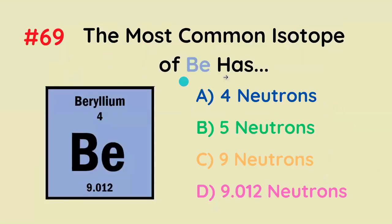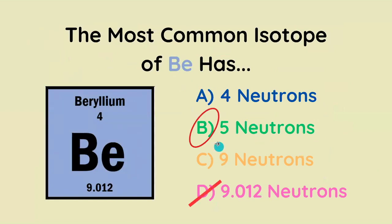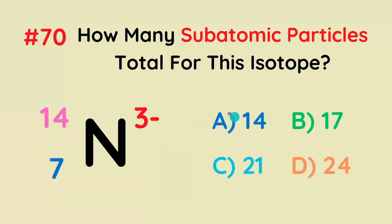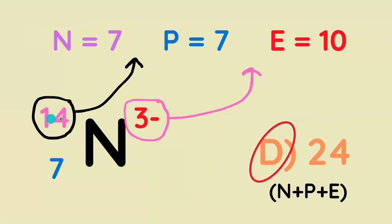The most common isotope of beryllium has how many neutrons? The correct answer is 5 neutrons, because 9 is the mass number, and with four protons, there are 5 neutrons. How many subatomic particles total are in this isotope? It's got 7 protons, a mass number of 14 so 7 neutrons, and with a negative 3 charge it has 3 more electrons than protons. Adding all three together, the total number of subatomic particles is 24.